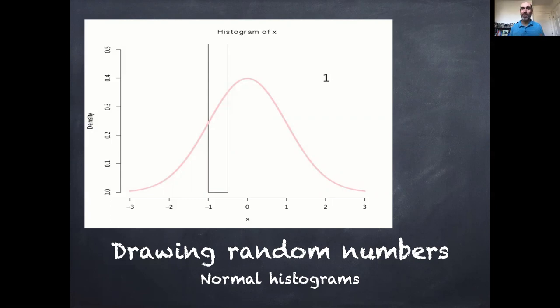The last thing I want to talk about is the idea of drawing random numbers from probability distributions, and I actually want to make a really important vocabulary distinction here: a random variable is a variable that can take on different values with some probability, but a random number represents an actual specific draw from that probability distribution.